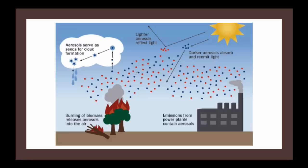I will show you some pictures so you will understand. What kind of emissions come from power plants — there are aerosols. And also when you burn biomass, aerosols are released. What are aerosols? You can call them seeds — they are cloud formation seeds. Light aerosols reflect light and scatter it, which is what you call haze.